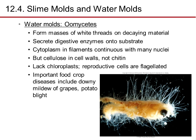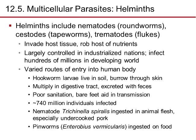Water molds are oomycetes that form massive white threads on decaying material and secrete digestive enzymes onto the substrate. The cytoplasm in their filaments is continuous with many nuclei, but they have cellulose in their cell walls — not chitin. They lack chloroplasts, so they are not photosynthetic, and their reproductive cells are flagellated. They cause important food crop diseases, including downy mildew of grapes and potato blight.